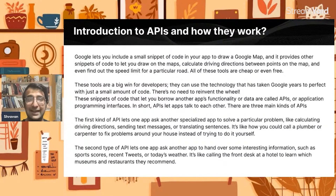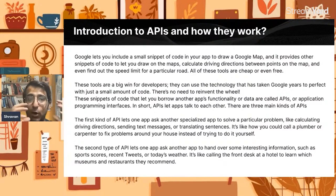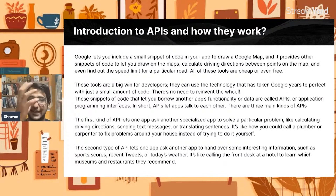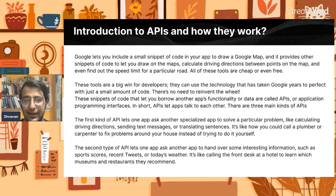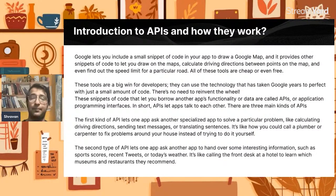An API is a small snippet of code which allows a particular application to use the functionality of one application in a second application. An API is called an Application Programming Interface. In short, APIs let applications talk to each other.